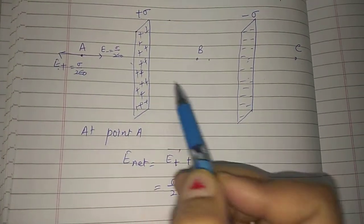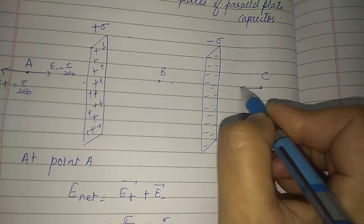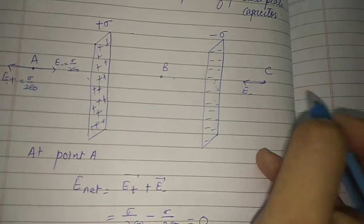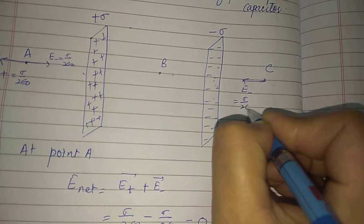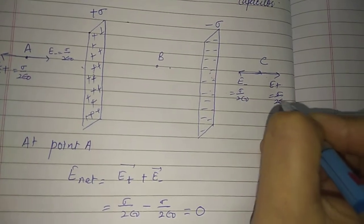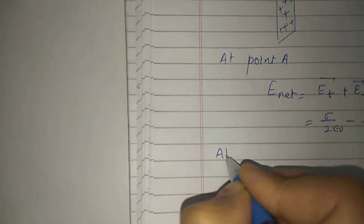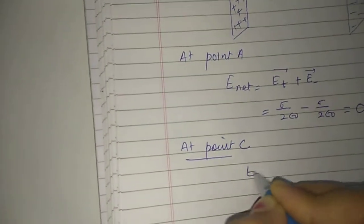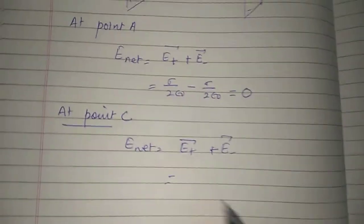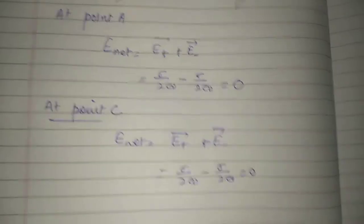Similarly, at point C: because of the negative charge the electric field is towards the negative plate, magnitude Sigma by two epsilon naught; and because of the positive charge the field is away from it, also Sigma by two epsilon naught. Both fields are equal in magnitude and opposite in direction, so the net electric field at point C is also zero.